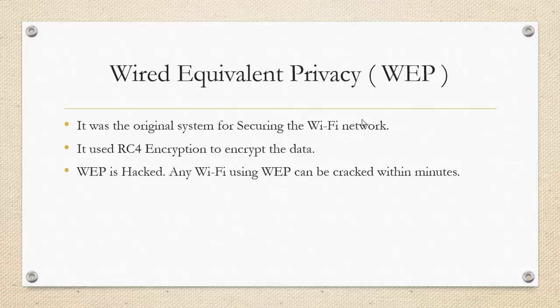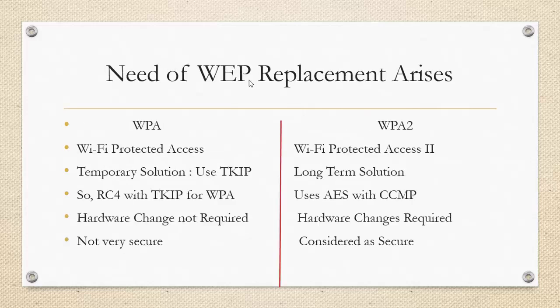So IEEE decided to build a much more robust and stronger standard. However, if they would have built a very strong standard then hardware changes were required. But during that time a lot of people had already bought the WEP-based router, so they decided to make a temporary solution which was called WPA. One of the advantages of WPA was that a hardware change was not required. However, the disadvantage is it is not very secure.